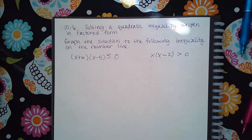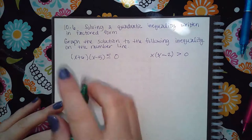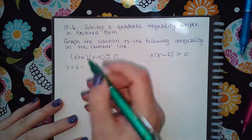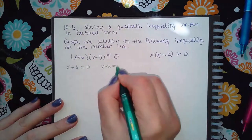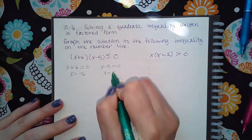Here we have solving a quadratic inequality written in factored form. So if it's already factored, you're going to find what we call our significant values. So set each one of these equal to zero. And so you get x equals negative six and x equals positive five.